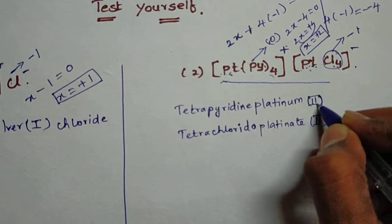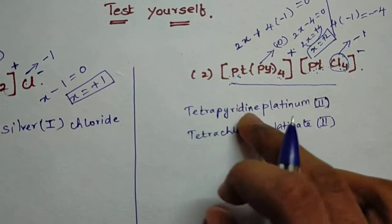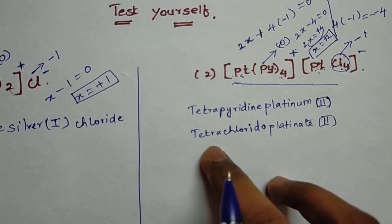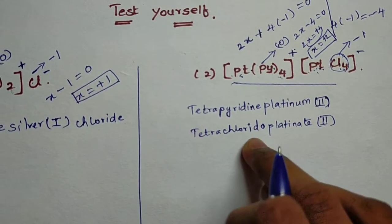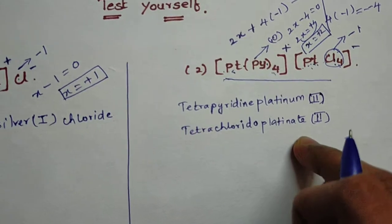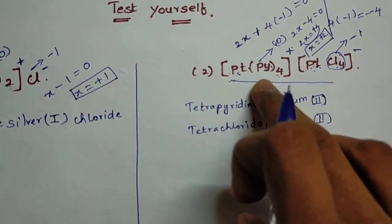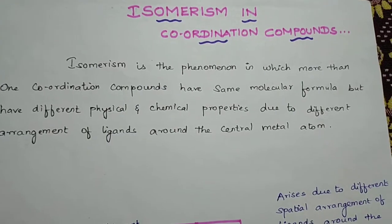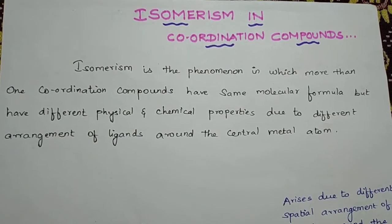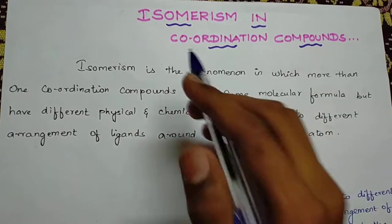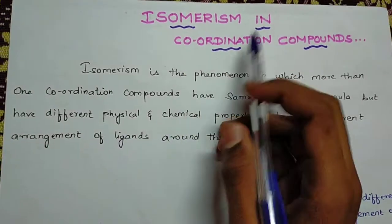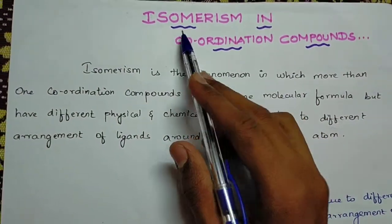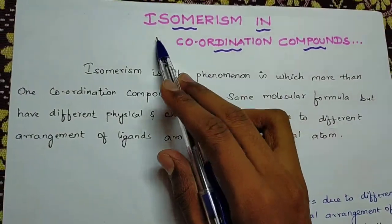So the full name is tetrapyridineplatinum(II) tetrachloridoplatinate(II). Now in this video we will discuss about the topic isomerism in coordination compounds.